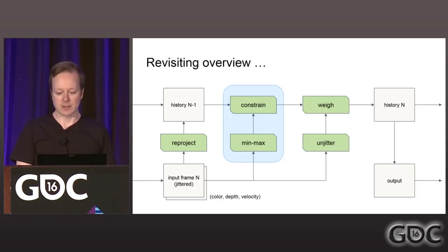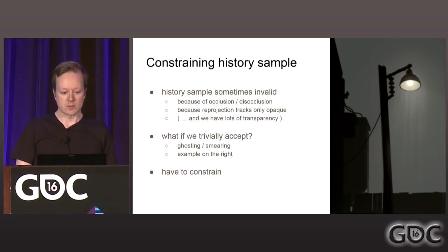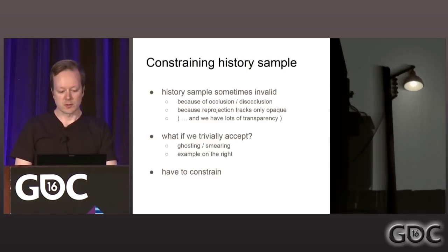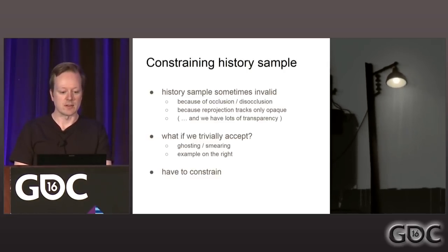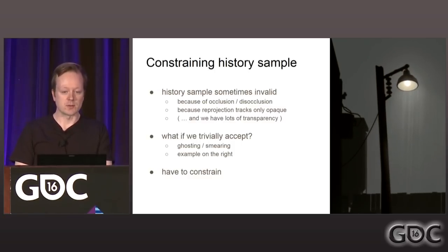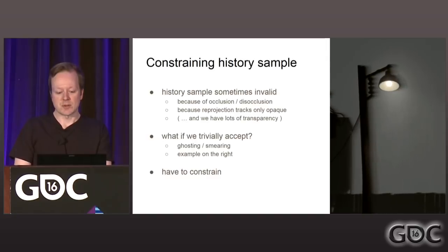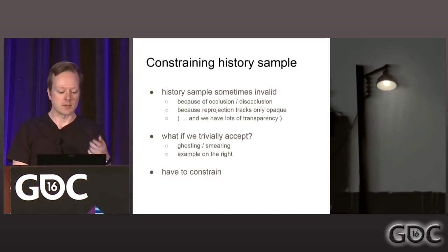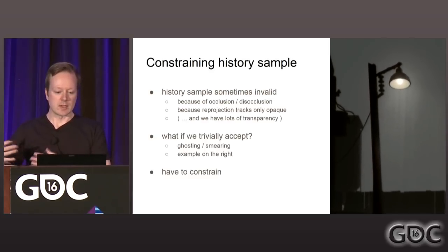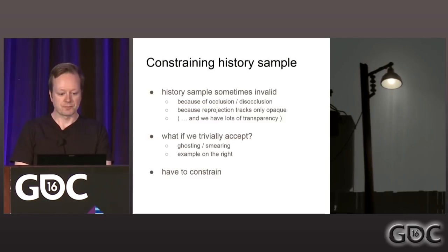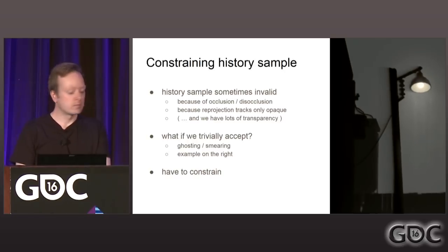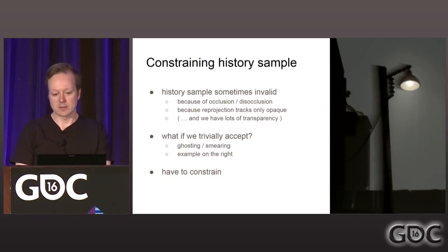Sometimes the reprojection is false and the history sample is essentially invalid — because of occlusion, objects moving around, or transparency layers in the line of sight from one perspective that are absent from the next. If we trivially accept the history sample, we get ghosting effects and smearing. So we have to constrain our history sample.